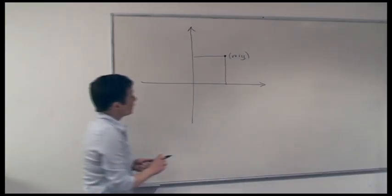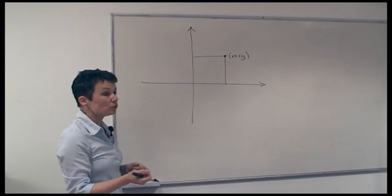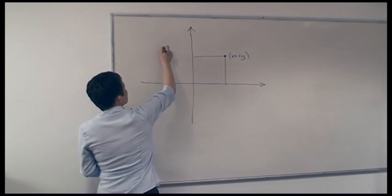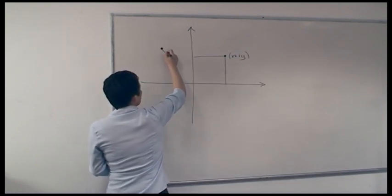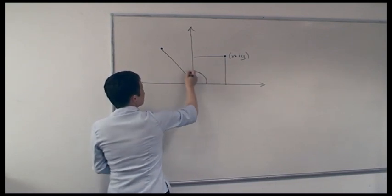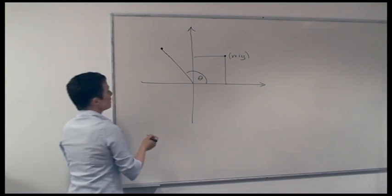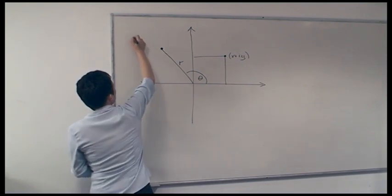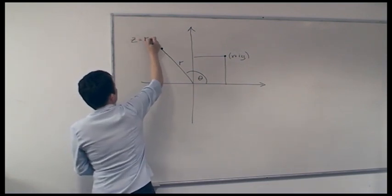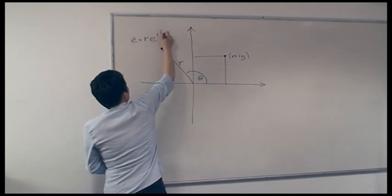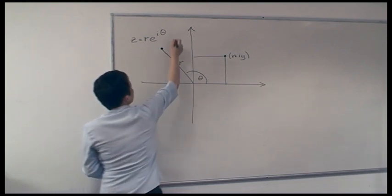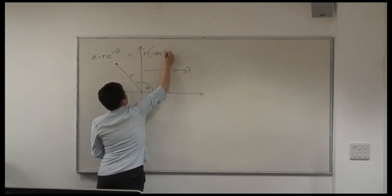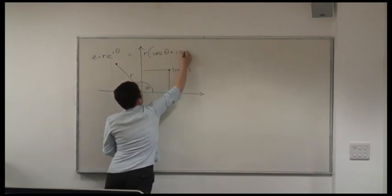So when multiplying two complex numbers, it's actually very useful to move to polar coordinates, which means that we think of a complex number, let's say z, in terms of its argument — which is the angle with the x-axis, often named theta — and its modulus, often named r. This complex number z we can then write by Euler's formula as r times e to the i theta. And if you would want to relate this to the real and imaginary part, this would be r times cosine theta plus i sine theta.